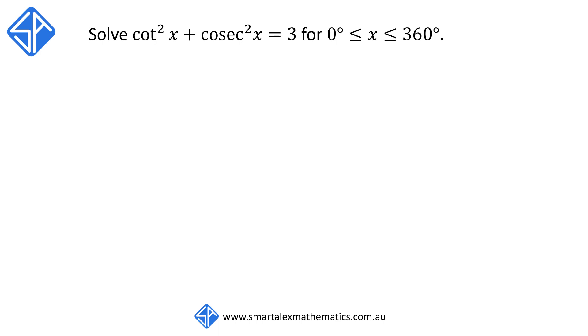The first step we're going to do is to express cot x and cosec x in terms of sine and cos, which we are familiar with. cot squared x is equal to cos squared x over sine squared x, cosec squared x is 1 over sine squared x and the right hand side is equal to 3.